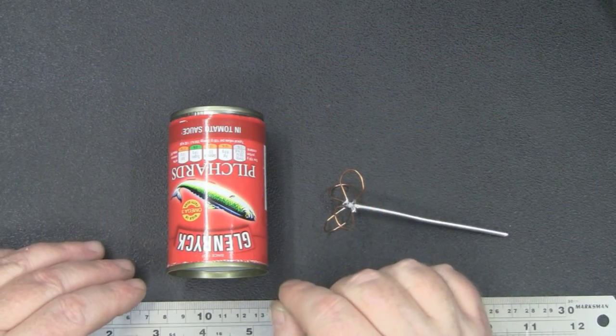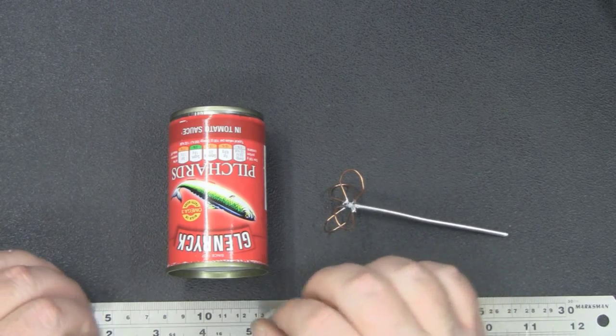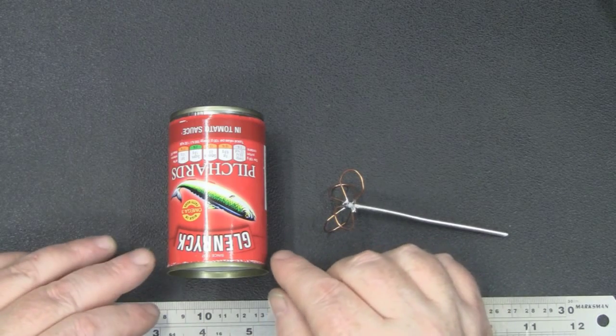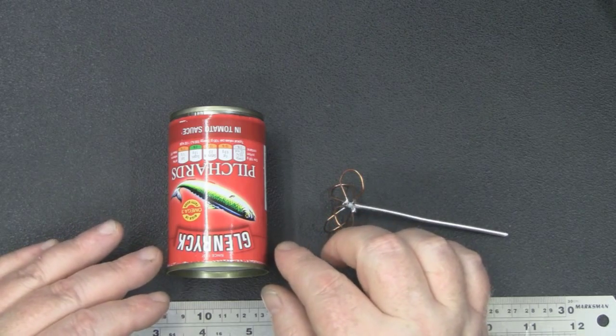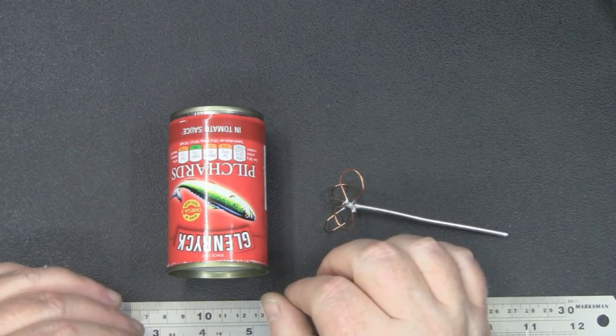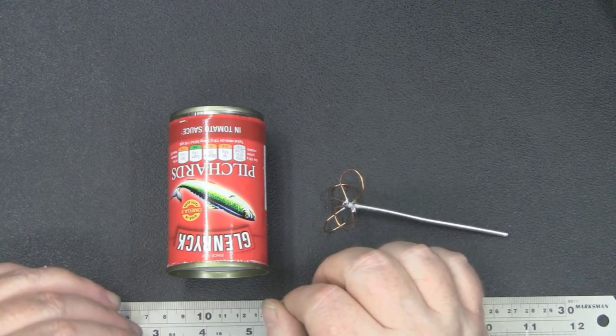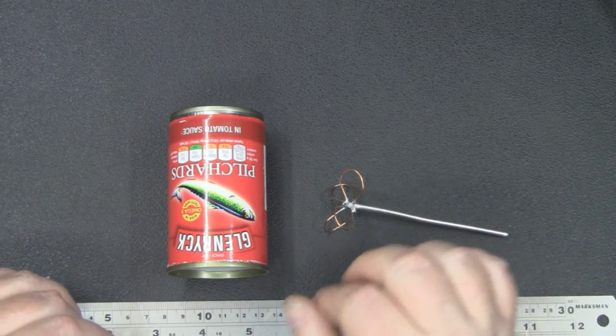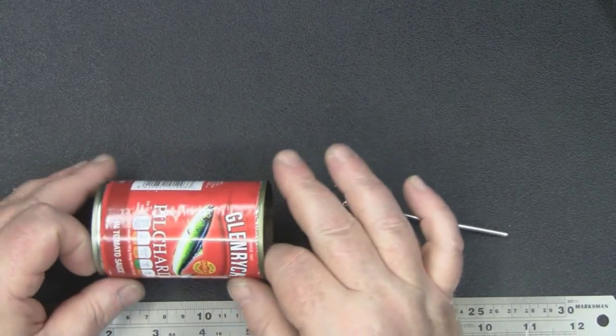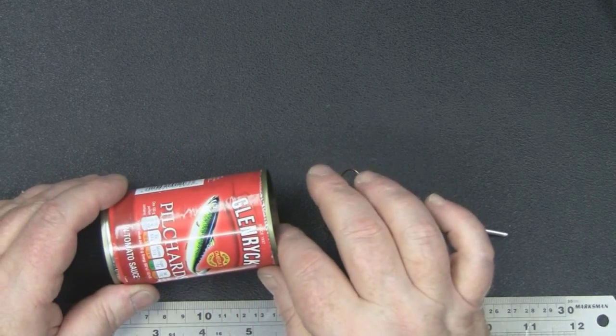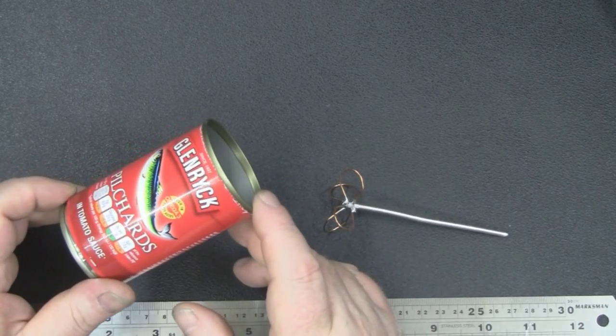After I released the video on how to build a circular polarized waveguide cantenna for 2.4GHz, I've had a few people ask me if I could make one for the 5.8GHz to use with FPV. The major difference with the 5.8GHz is just that everything's a lot smaller.